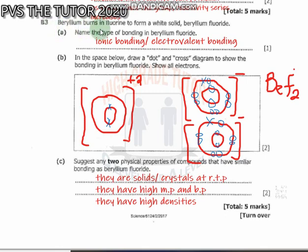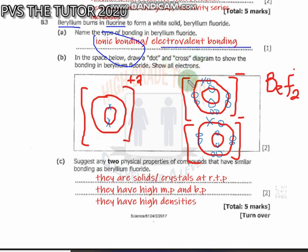Question B3 says beryllium burns in fluorine to form a white solid, beryllium fluoride. Name the type of bonding in beryllium fluoride. Beryllium is a metal and fluorine is a non-metal, so the type of bonding found between a metal and a non-metal is ionic or electrovalent bonding.